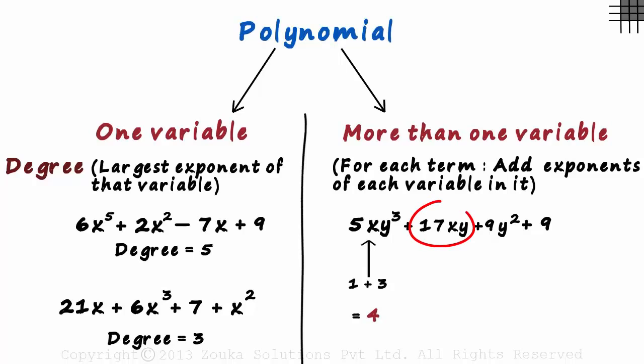Now we come to the second term. There are two variables, x and y, and each of them have an exponent equal to 1. Adding the exponents, we consider the exponent of this term to be 1 plus 1 which equals 2.